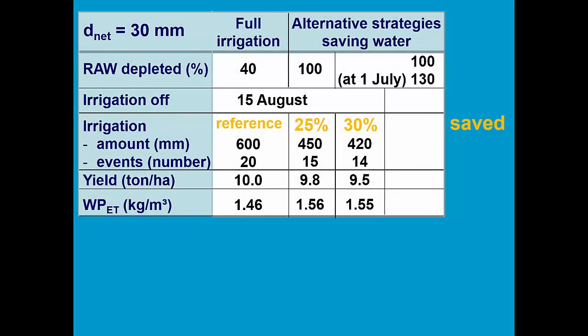In the last alternative strategy, we switch off the irrigation at the end of the season, starting from the 1st of August. As a consequence, we save 40% of the water with reference to the full irrigation, and we only have 12 events applying 30 mm of water. The yield drops now by 10%, but the ET water productivity remains high.